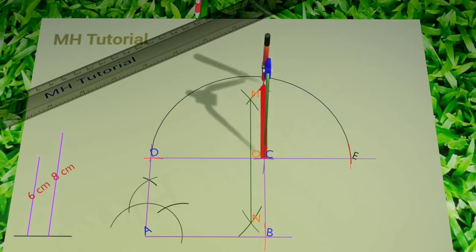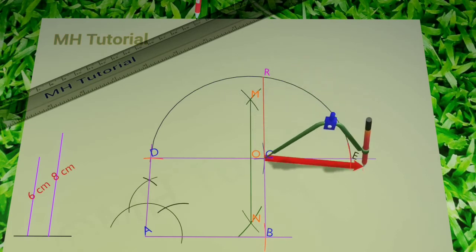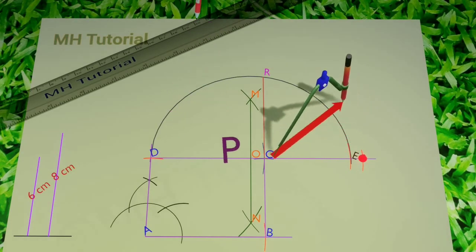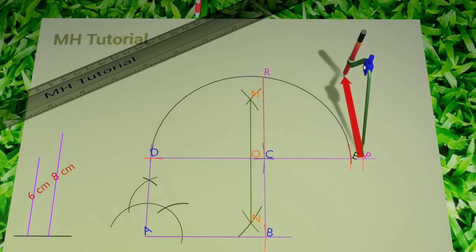The length CR is measured with a compass. Now a line segment equal to CR is subtracted from segment CE. This part is CP.